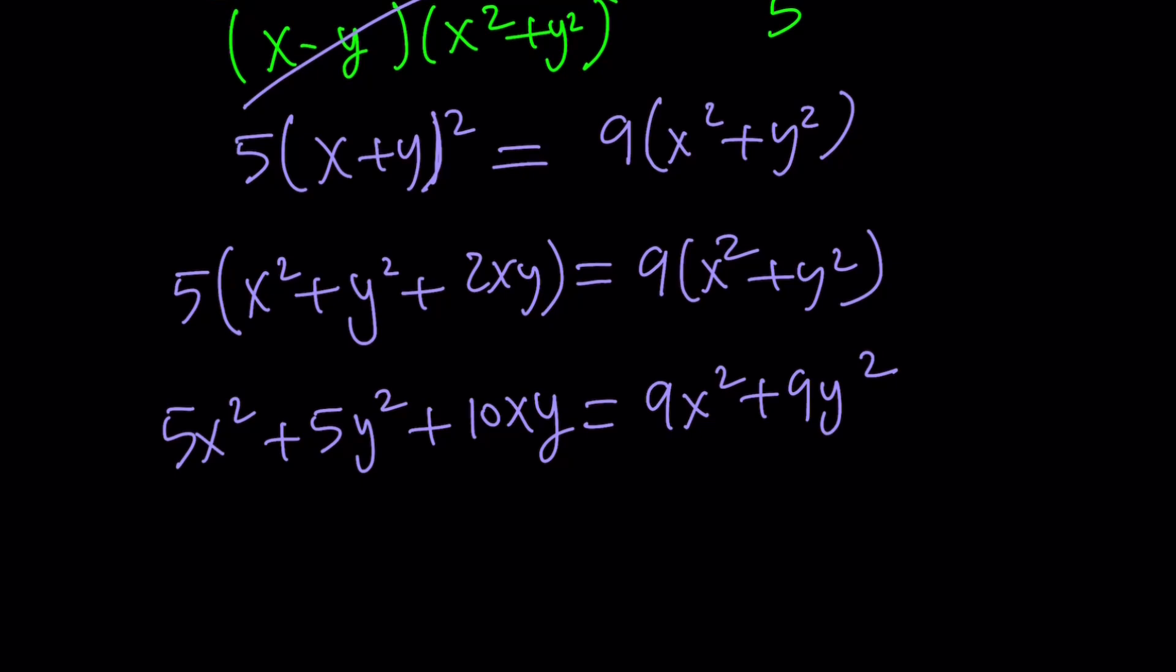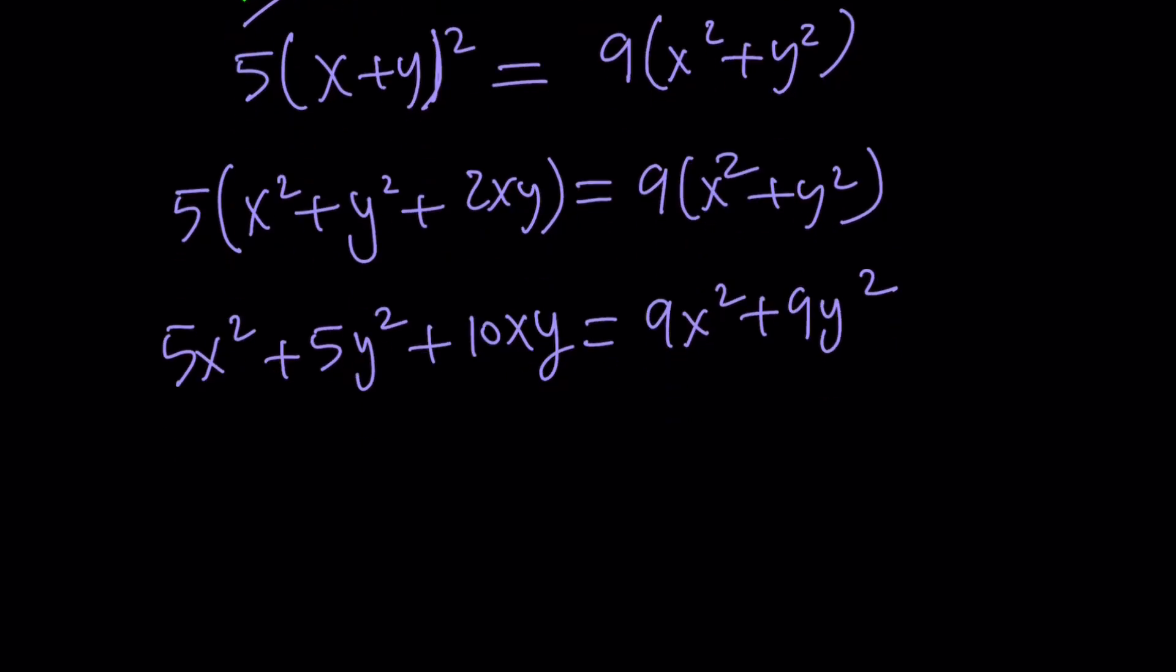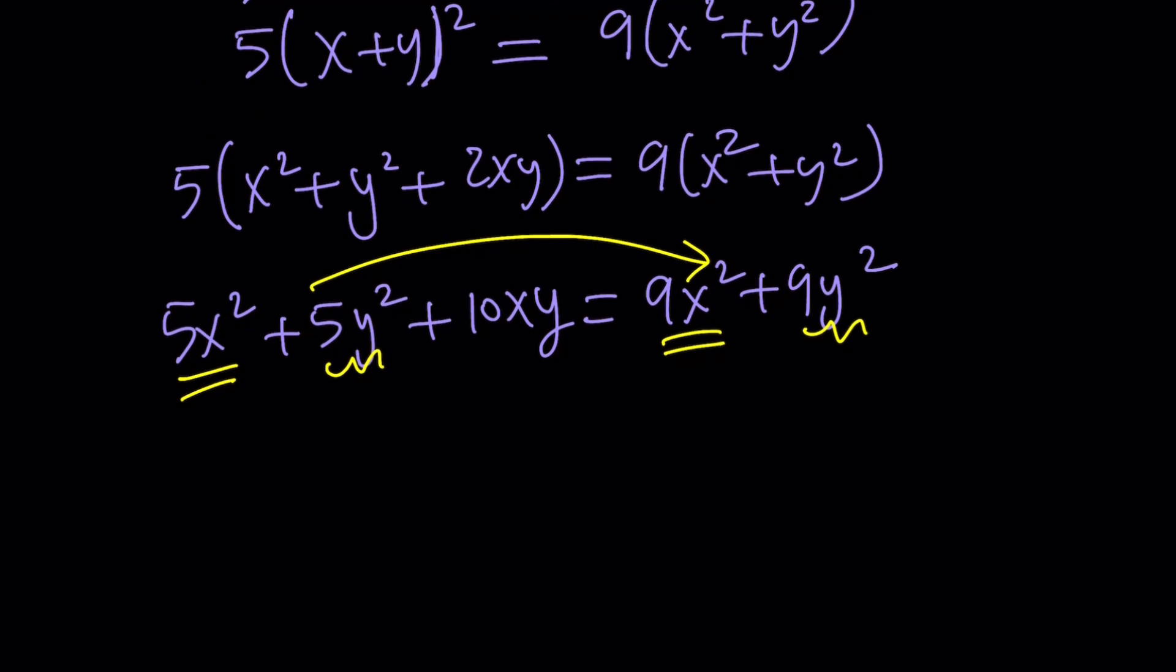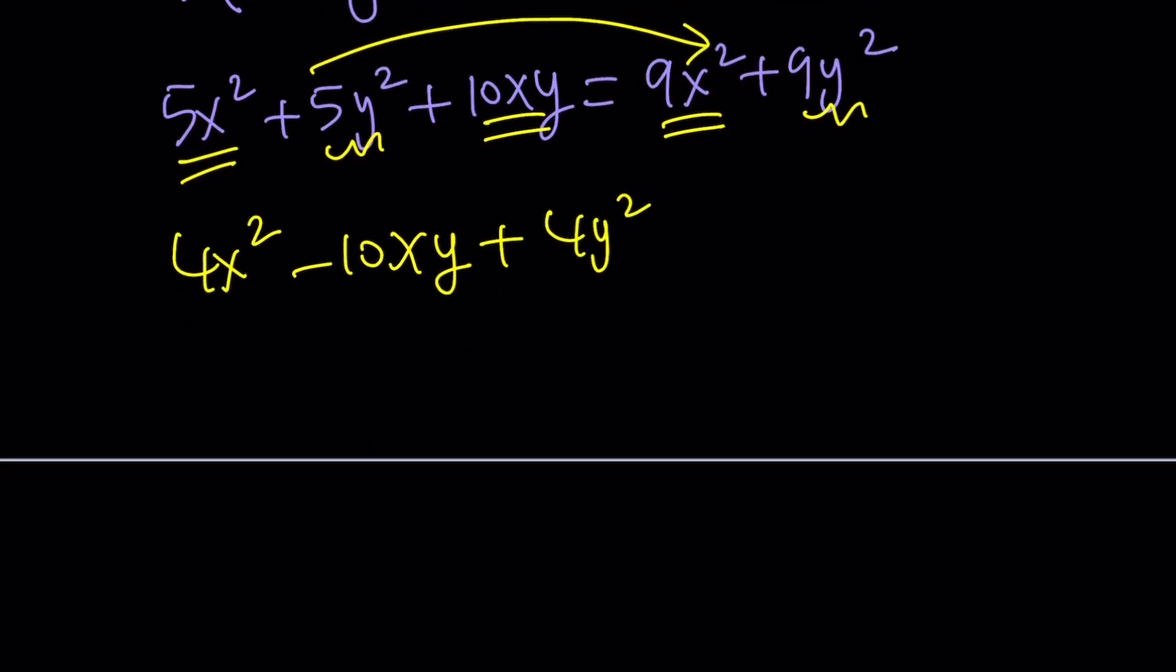So, 5x squared plus 5y squared plus 10xy and then equals 9x squared plus 9y squared. Now, it makes sense if you put everything on the same side and combine like terms. So, for example, we can go ahead and subtract these two, and we can subtract these two. And let's do it on the right-hand side, because not because it's the right side, but because that's going to make the x squared positive. So, if you subtract 5x squared, you're going to get 4x squared.